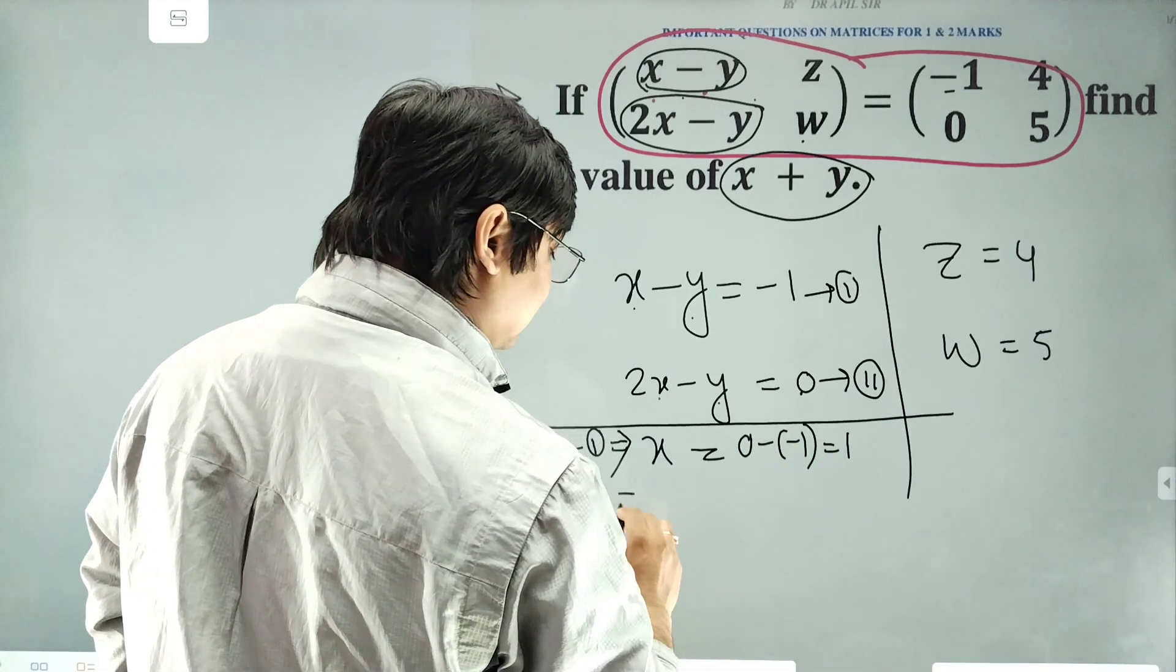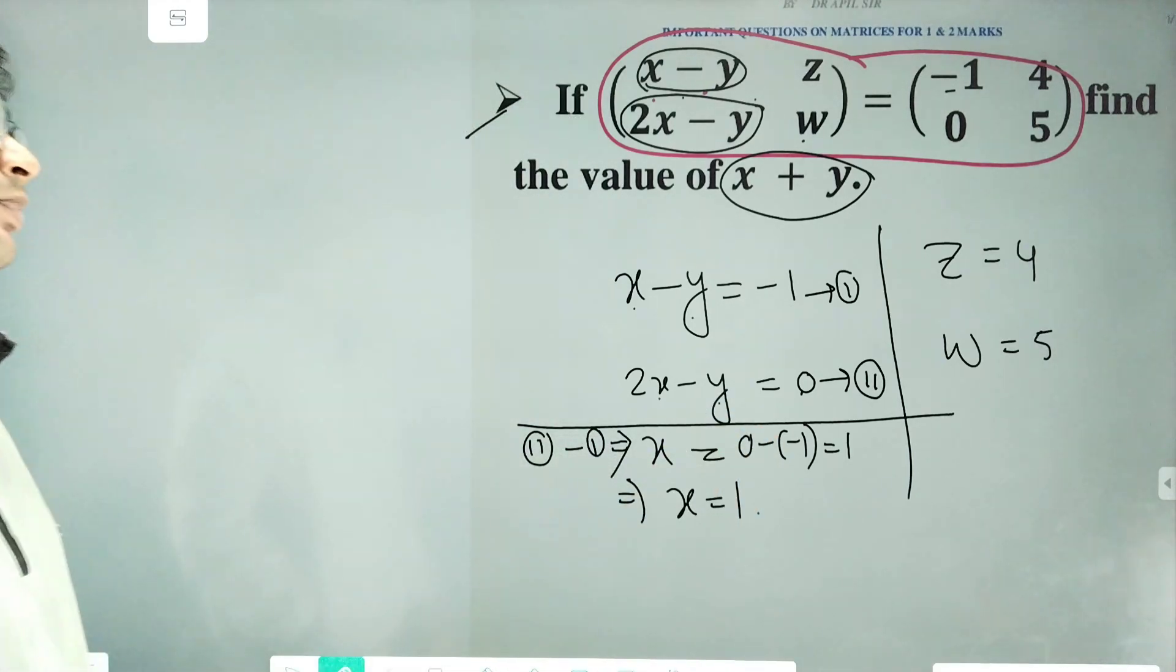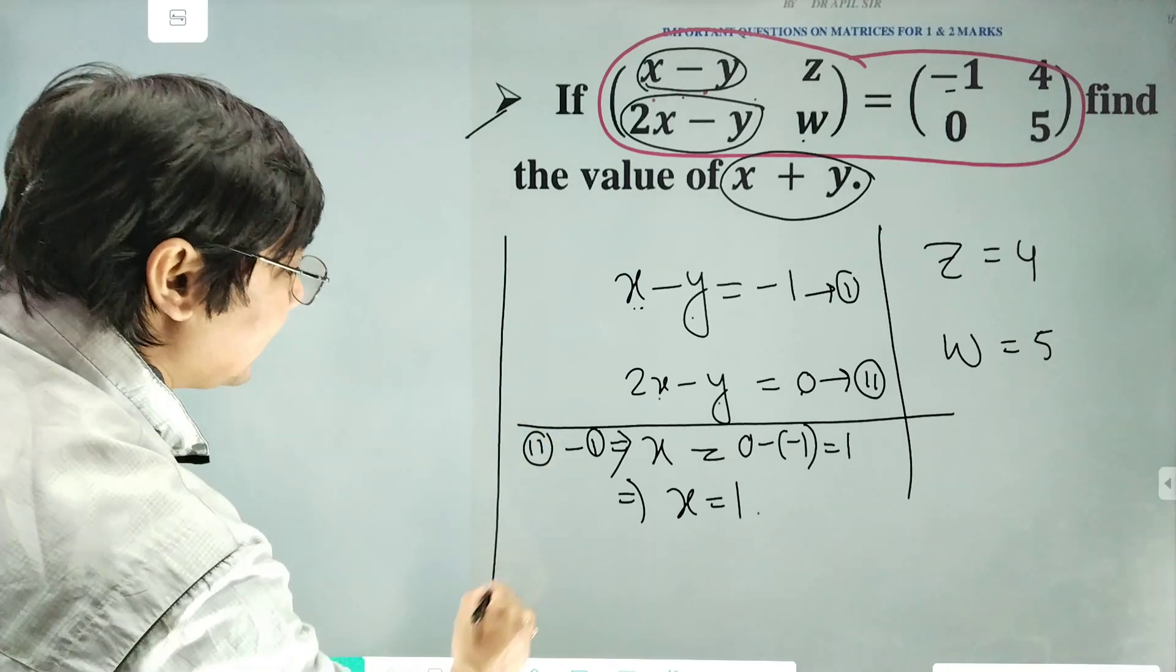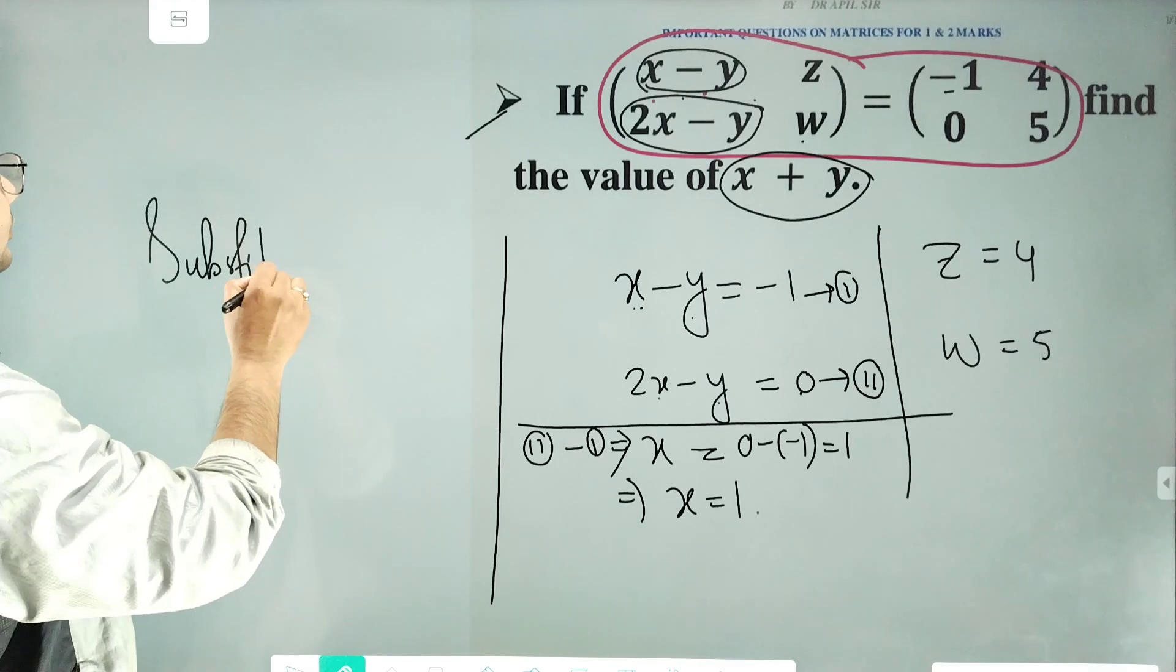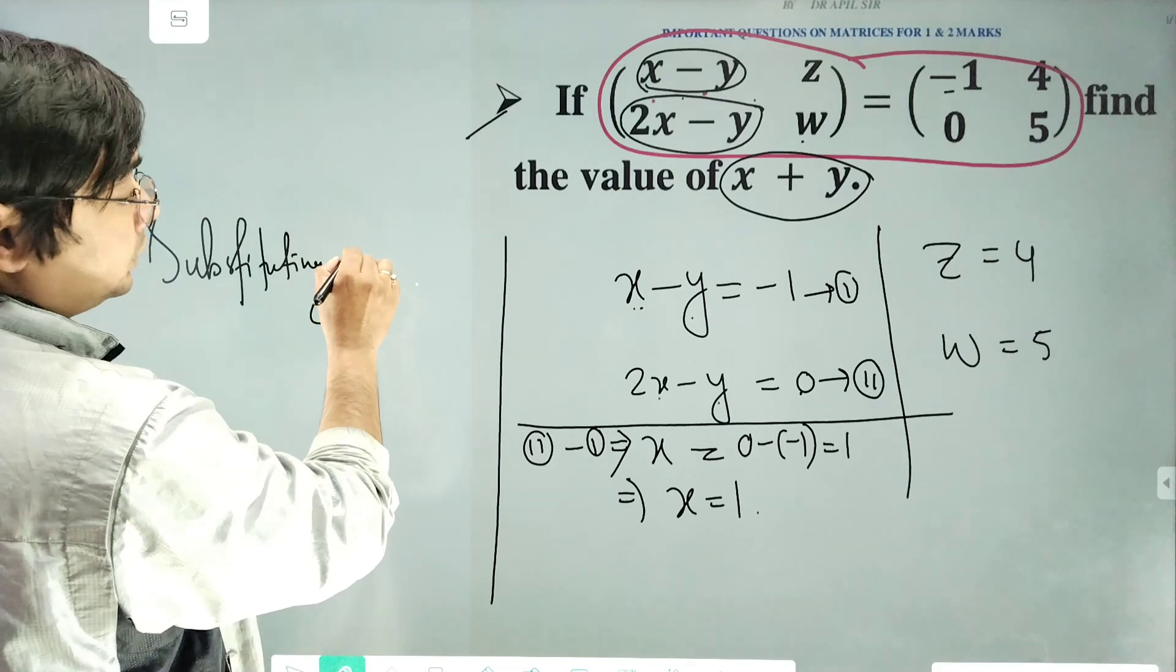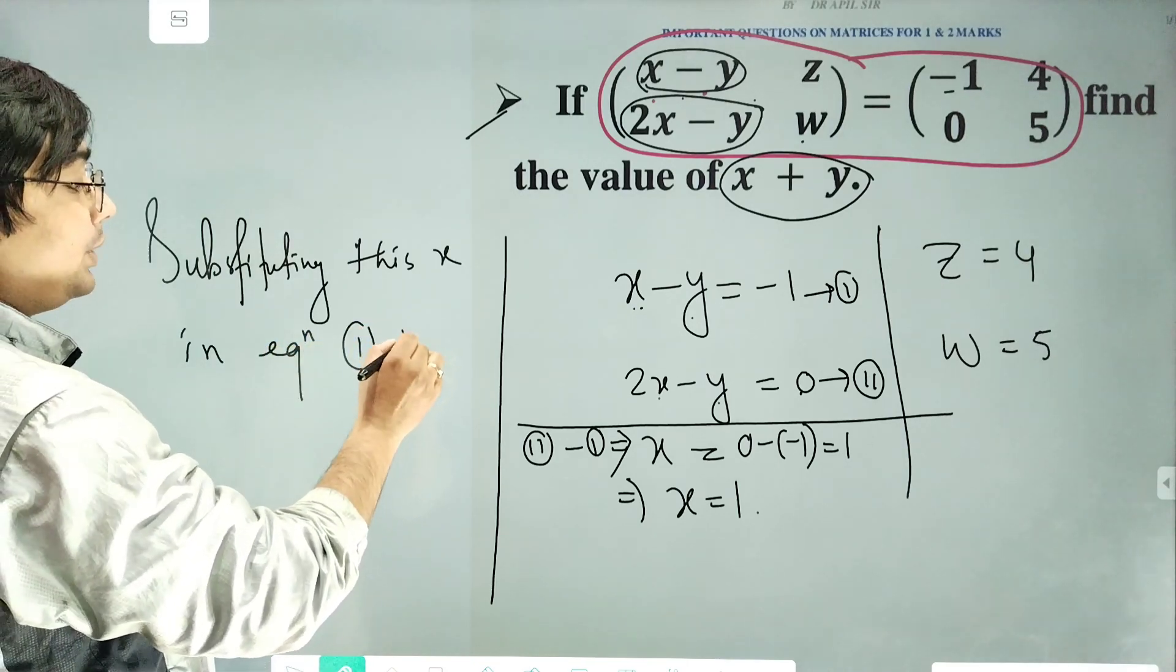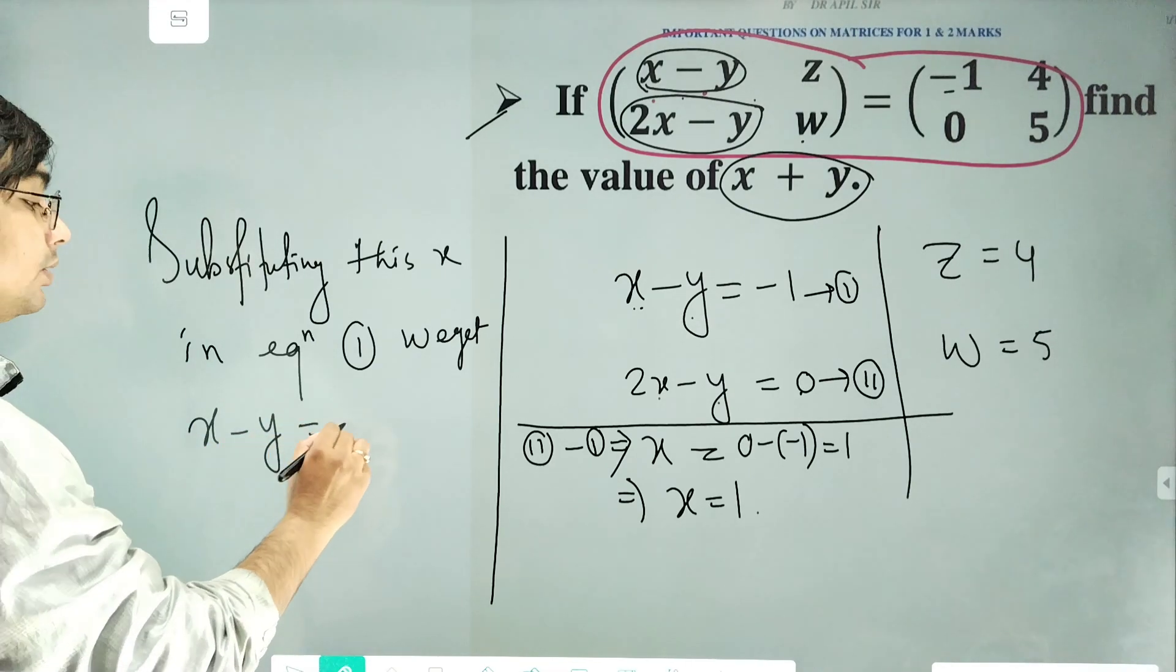This will be 1, so x is equal to 1. We can substitute this x in equation 1. We get x minus y is equal to minus 1.